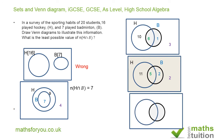If 12 students play just hockey, then since we need 16 total hockey players, 4 must play both hockey and badminton. Since 7 play badminton and 4 already play both, 3 play just badminton only. So 12 + 4 + 3 = 19, meaning one student plays neither hockey nor badminton.